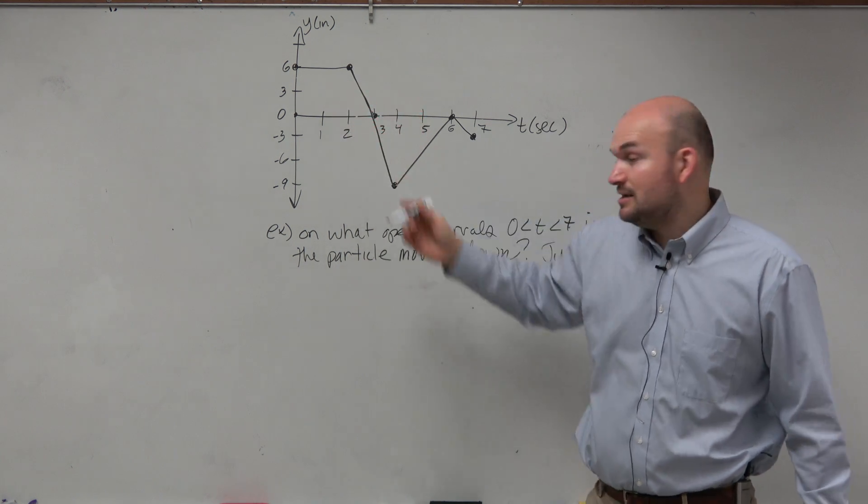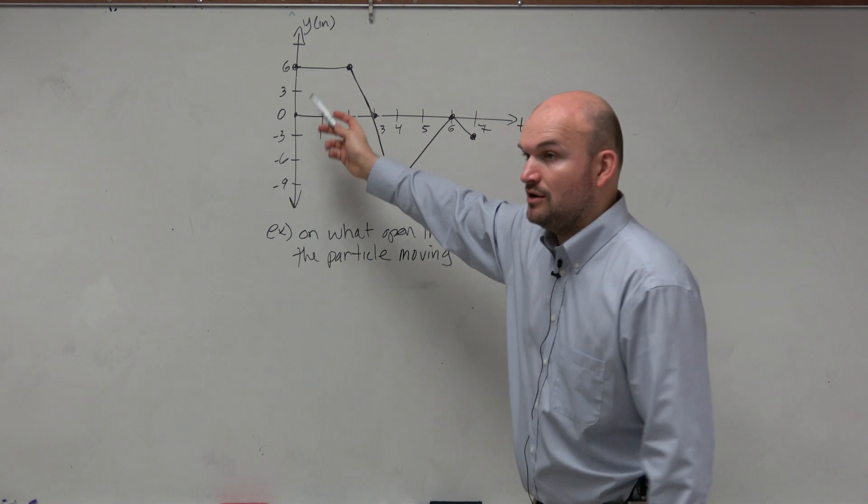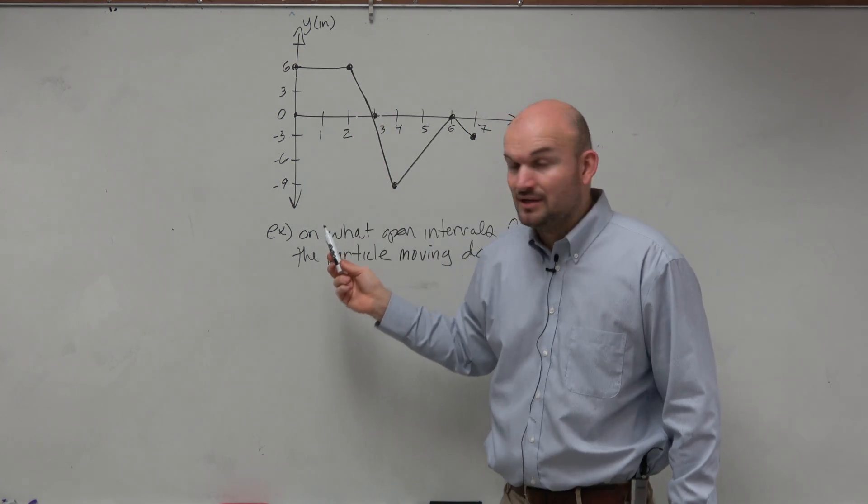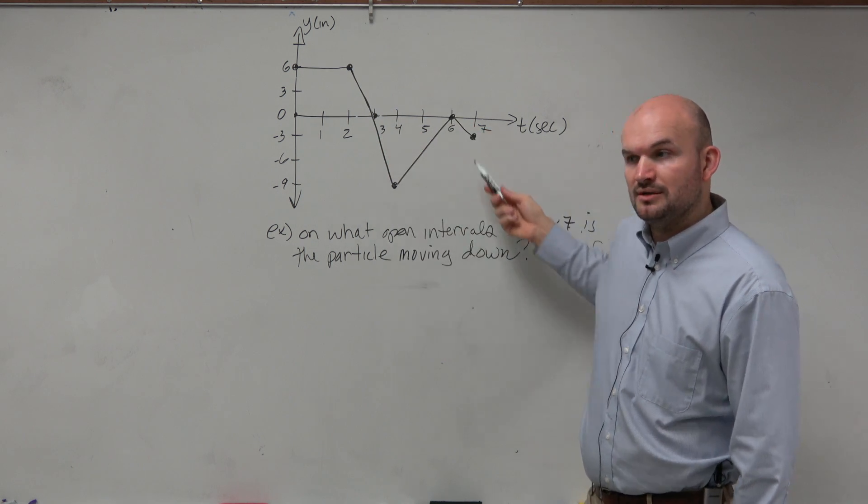We could say slope. Right? So we know that the particle is moving down. If it's up here at 6 inches, then it goes down to 9, it's obviously moving down. So we know that it's always going down when the slopes are negative.